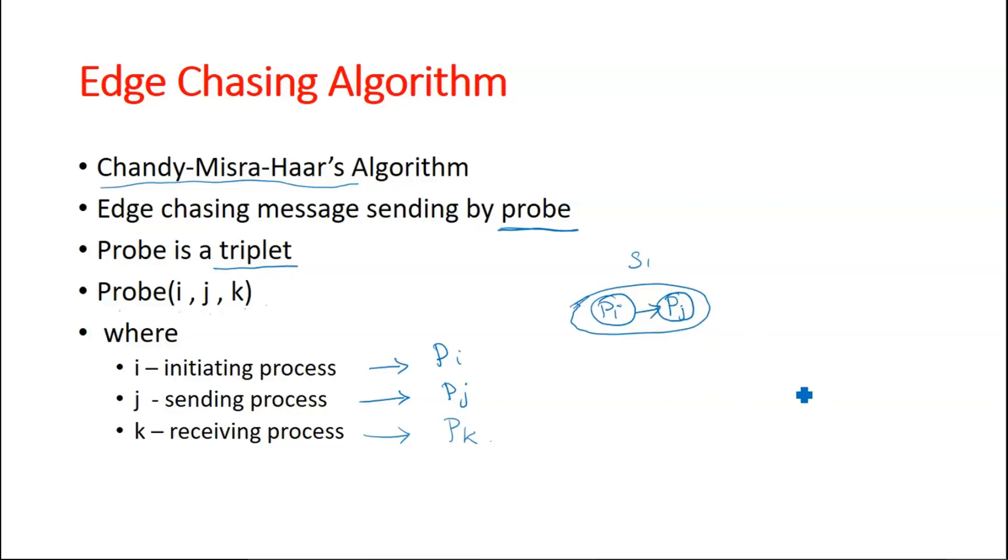There is a dependency, and another site is here. In this site one more process pk resides. Now if there is a probe, and now pj at site s1 is waiting for site 2's resource, so there is a dependency that exists.